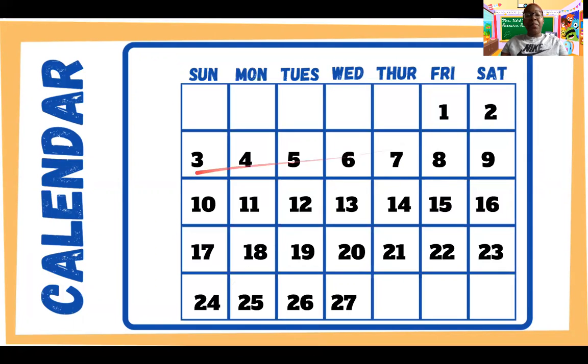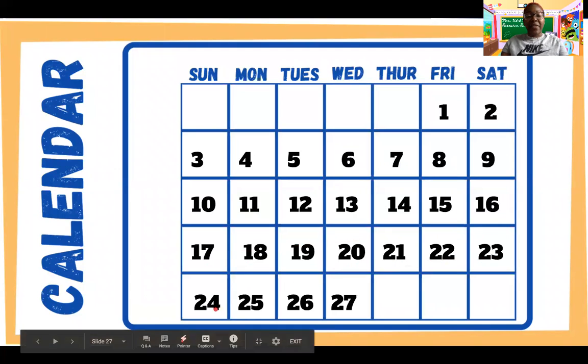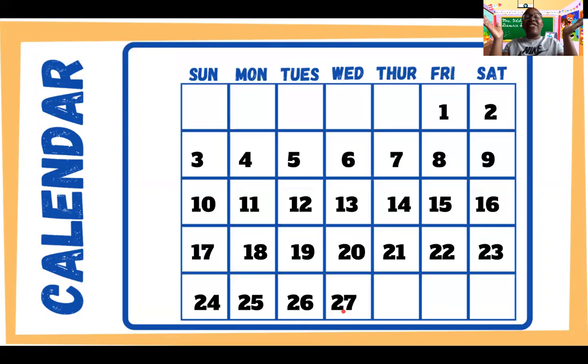Let's count our numbers together so that we can figure out what day of the month we're in now. 1, 2, 3, 4, 5, 6, 7, 8, 9, 10, 11, 12, 13, 14, 15, 16, 17, 18, 19, 20, 21, 22, 23, 24, 25, 26, 27.